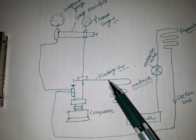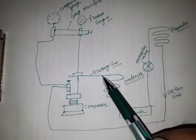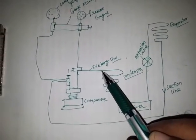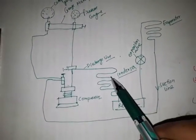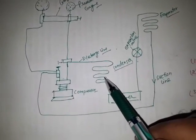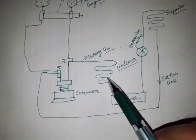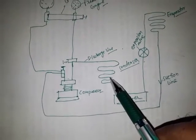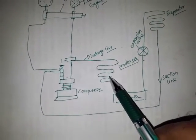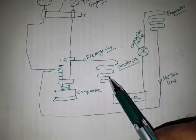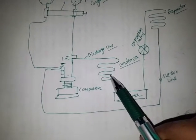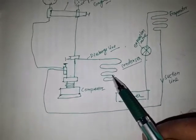The discharge line basically conveys the high pressure and high temperature refrigerant vapor from the compressor to the condenser. In the condenser, the high temperature and high pressure vapors are condensed, and the pressure of the refrigerant is maintained almost constant while the temperature of the refrigerant is lowered.